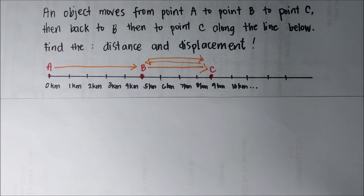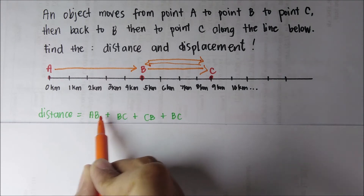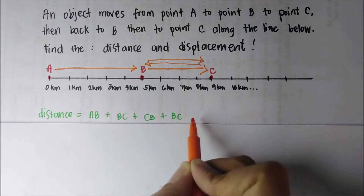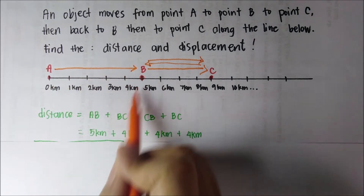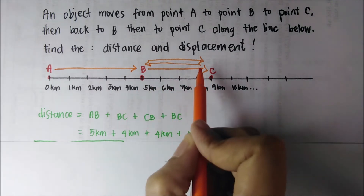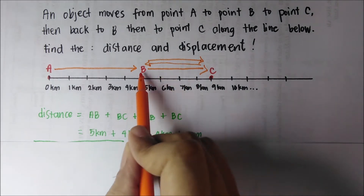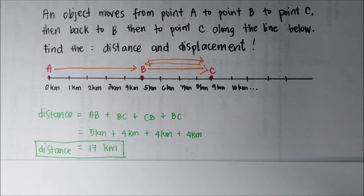For the total computation of distance: from point A to point B it's 5 kilometers, B to C it's 4 kilometers, then back to B it's 4 kilometers, and then to point C again it's 4 kilometers. So we now have a total of 17 kilometers for the distance traveled by the object.